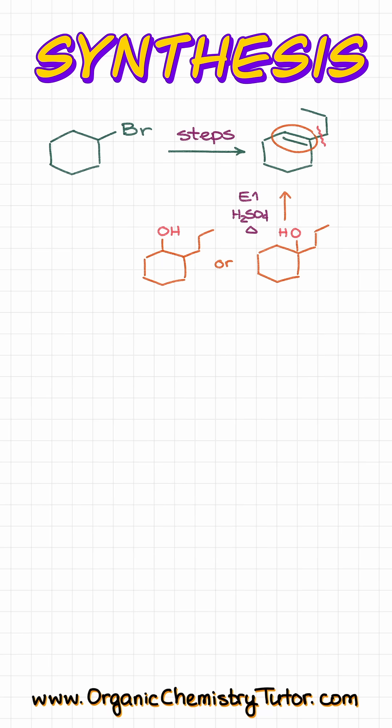Now, when it comes to my alcohol, I can make either of these alcohols via the Grignard reaction using the same Grignard reagent. The molecule on the left I can synthesize by using the epoxide plus the Grignard reagent, while the alcohol on the right can be synthesized if we use the ketone plus the same propylmagnesium bromide.